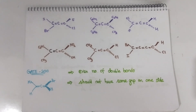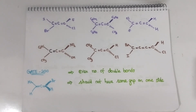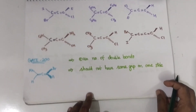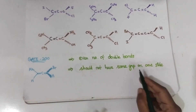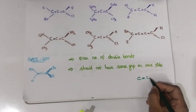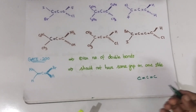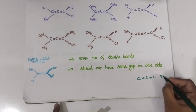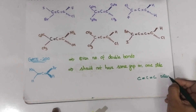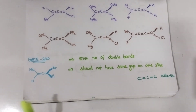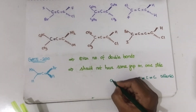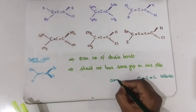This is the allene system. Why is it known as allene? In your lower classes, you would have studied that there are three types of dienes. If the double bonds are present in adjacent positions, they are known as allenes or accumulated alkenes.